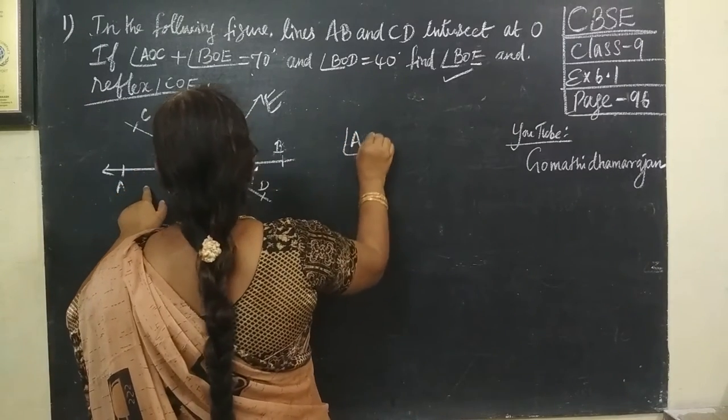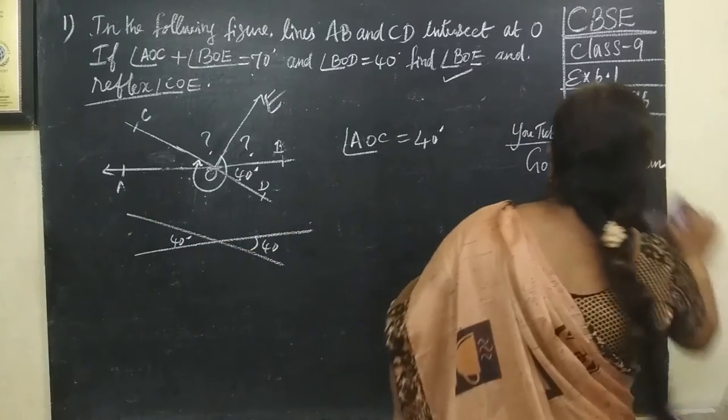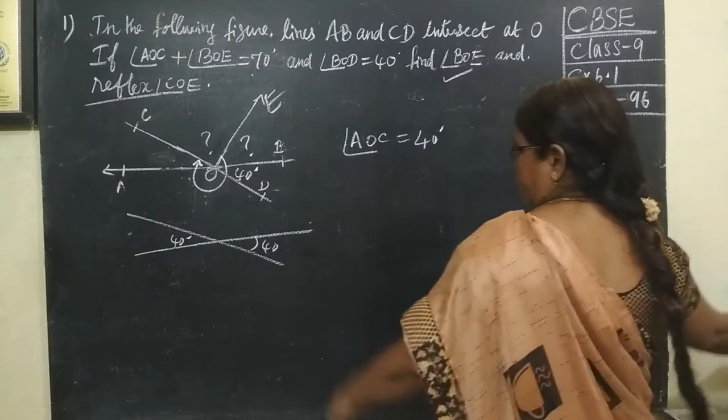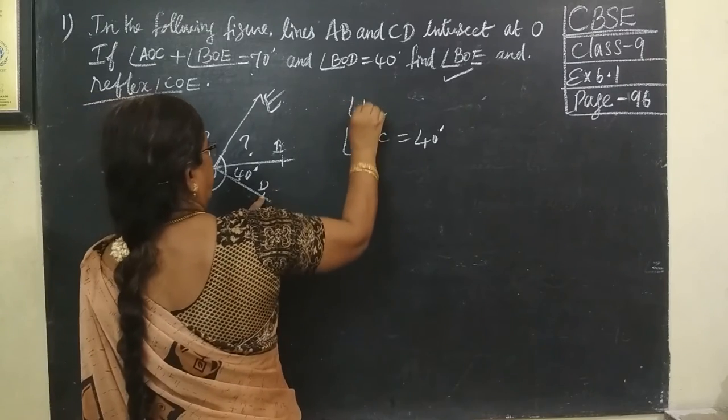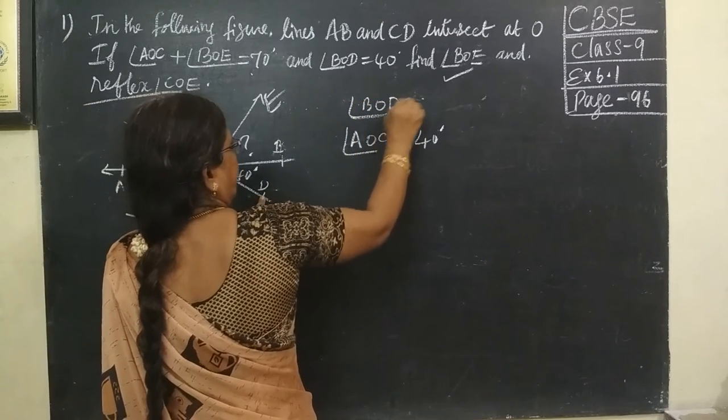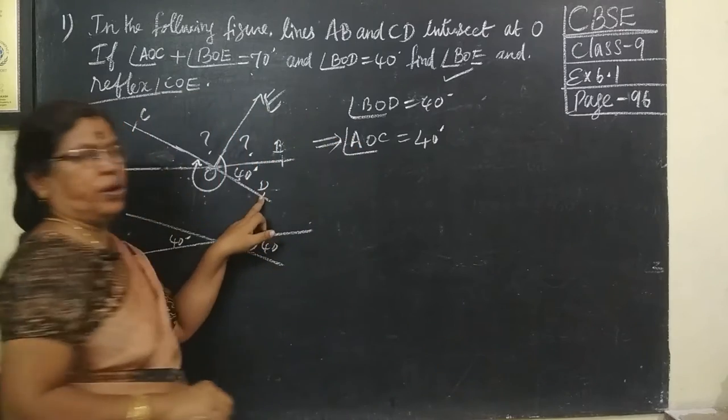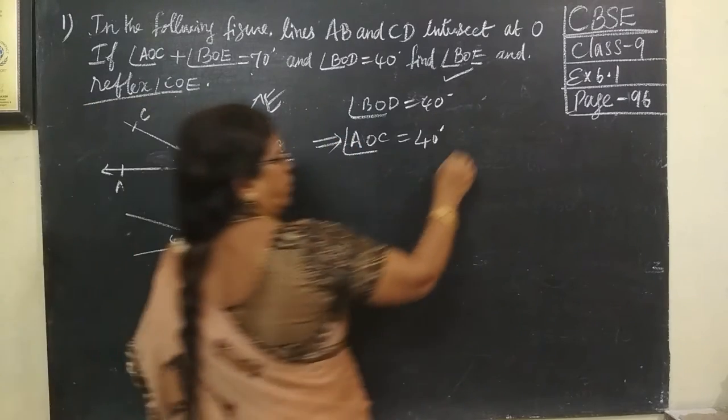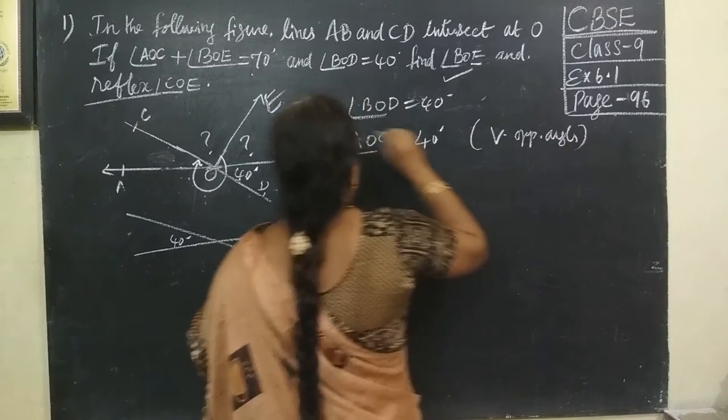Angle AOC equal to 40 degrees. Angle AOC also equal to 40. Reason: vertically opposite angle. So, first one over.